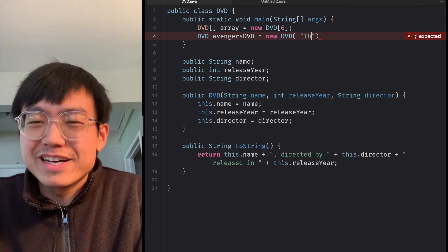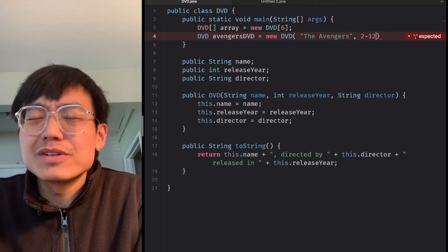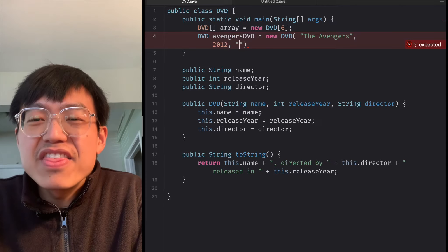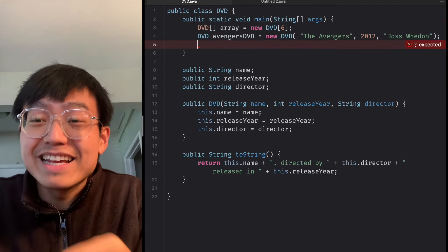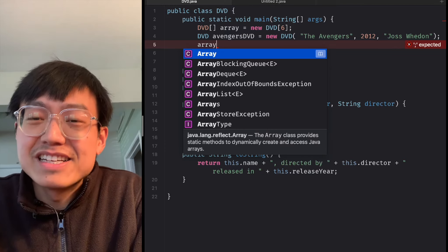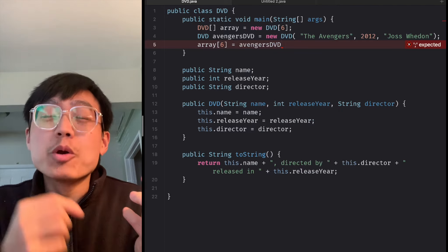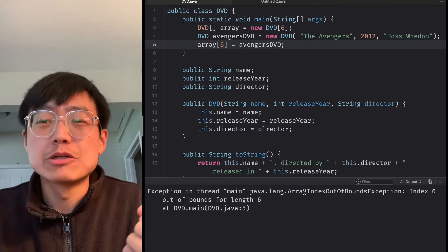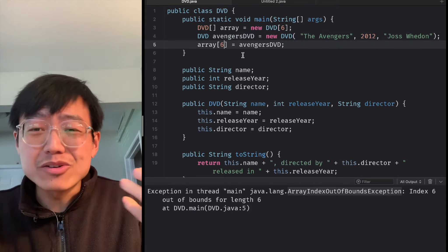When we create an array, we specify that it can hold up to only 6 DVDs. This is the array's capacity. But remember that indexing starts at 0. We can only insert items at array 0, array 1, array 2, array 3, array 4, and array 5.